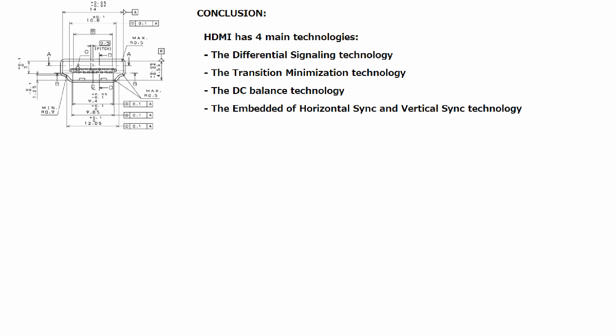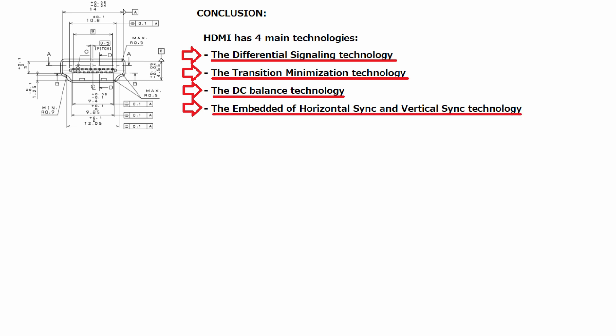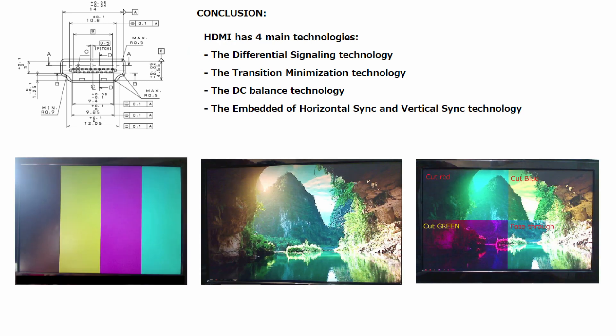To conclude, there are four main technologies implemented on the HDMI interface: the differential signal technology, the transition minimization technology, the DC balance technology, and the embedded horizontal sync and vertical sync technology. Each of these technologies plays an important role in the HDMI interface. By understanding these technologies, we can output an HDMI signal to the screen using an FPGA board. Thank you for your attention.